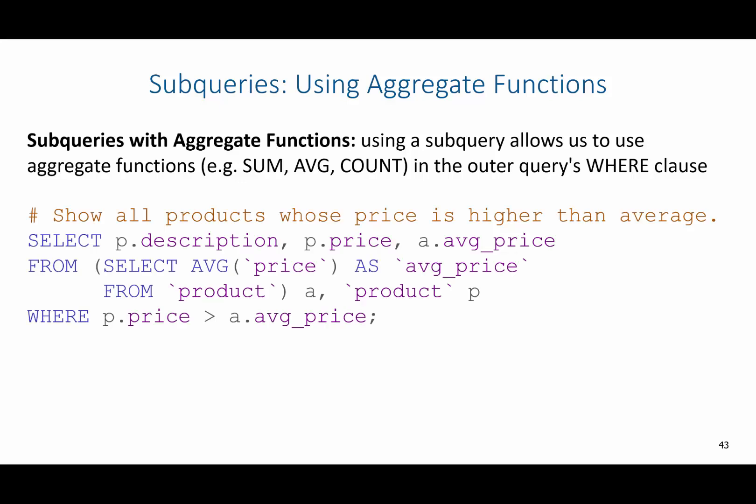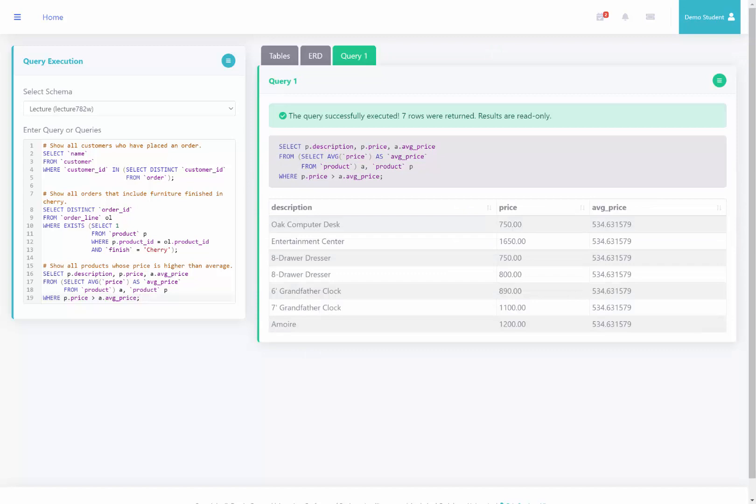For example, if I wanted to show all products whose price is higher than average, I'll look at the from statement first and create a temporary table. This query will say select average price as average price, giving one column with the average price value, coming from the product table — and I'll give it an alias of A. I'll also select from the product table with alias P. In the select statement, I'll display the description and price from the product table and the average price from the temporary table, where the product's price is greater than the average price. Running this query, we see all these products have a price greater than the average price of $534.63.